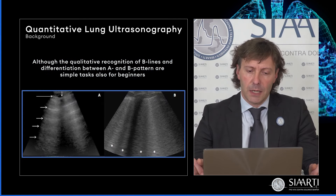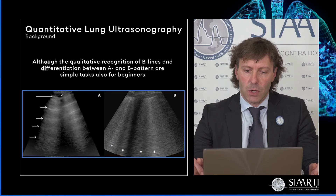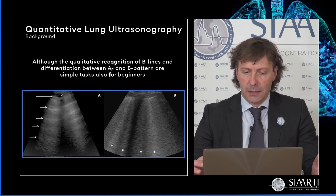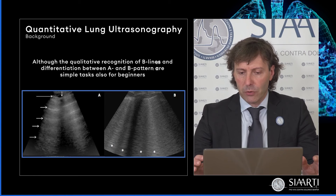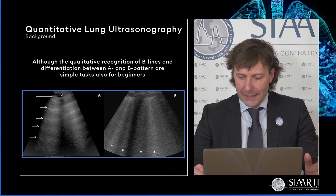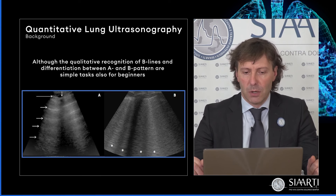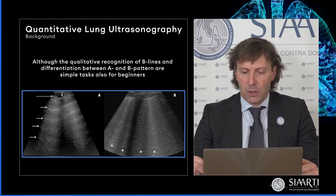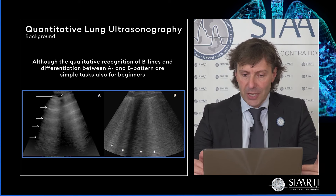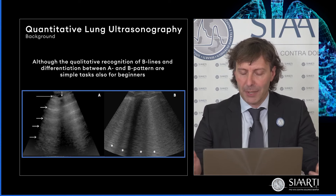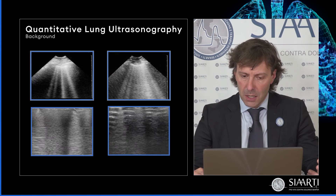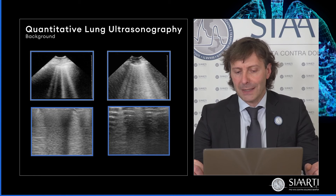Noi sappiamo che riconoscere un pattern A da un pattern B è piuttosto semplice dal punto di vista qualitativo. Tuttavia, la caratterizzazione ultrasonografica delle linee B per quello che riguarda la loro distanza, la loro coalescenza, intensità, persistenza durante tutto il ciclo respiratorio, può essere veramente non intuitivo.